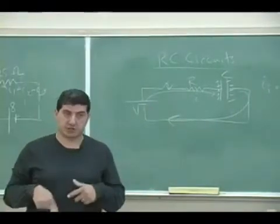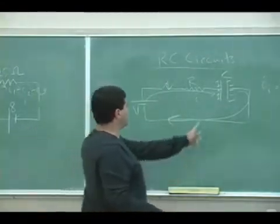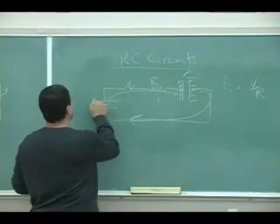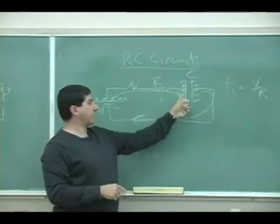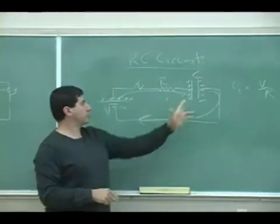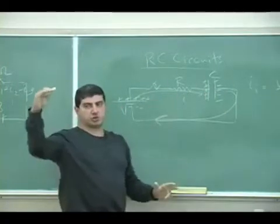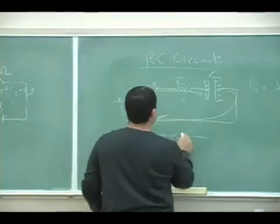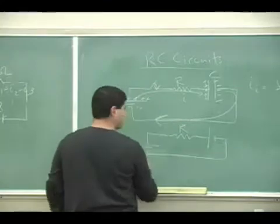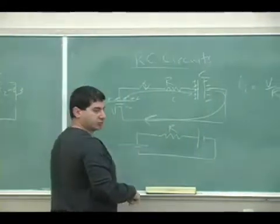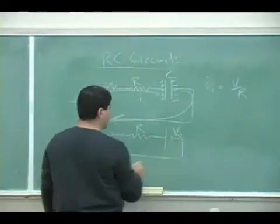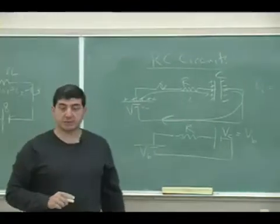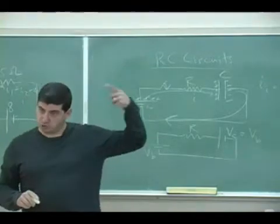But what ends up happening as the capacitor charges and builds up charge, it begins to act like a battery which is opposed to this battery. Because this battery has the negative here and the positive here — this capacitor has the positive on the left end, so it's opposing this one. So eventually this begins to oppose, and the current begins to drop. You get to a situation where this thing acts like a battery pushing the current that way.